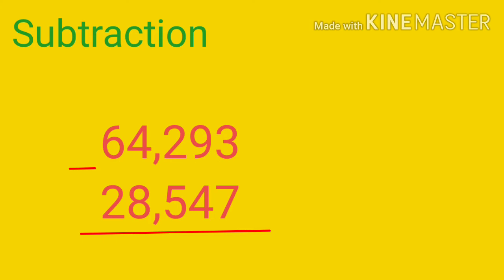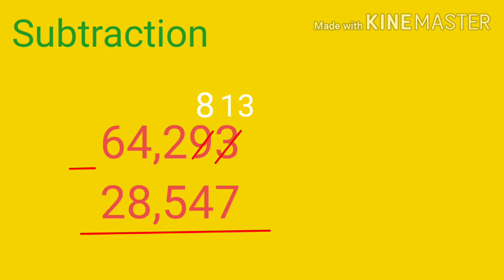In this subtraction problem, only a five-digit number is given to subtract. Let's start: 64293 minus 28547. First, subtract 7 from 3 — it's not possible, so borrow one and subtract 7 from 13. 13 minus 7 equals 6.